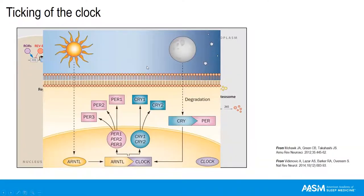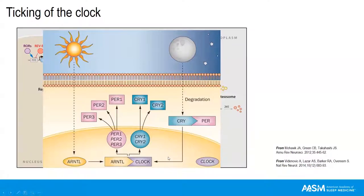In an individual with a normal circadian clock entrained to a 24-hour day, BMAL (represented as ARNTL) and CLOCK heterodimers form in the nucleus and promote transcription of PER and CRY starting at the beginning of the daylight period. By end of the daylight period, PER and CRY have built up in the nucleus and inhibit their own transcription. Over the course of the night, those PER and CRY heterodimers are degraded and depleted, and at the beginning of the next day, PER and CRY are transcribed again, forming that 24.2-hour loop.